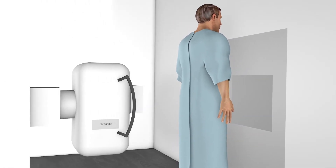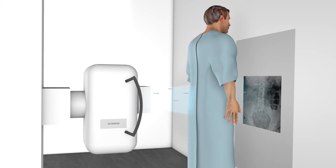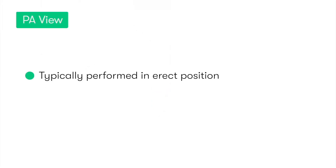The posterior-anterior, or PA view, involves x-ray beams being fired from the back of the patient through to the patient's front, and it's typically done with the patient standing upright with their abdomen facing the x-ray receptor. Unlike the AP view, which is used a lot, this view is rarely used in the acute setting, as typically these patients can be quite unwell and have a significant amount of abdominal pain, so getting them to stand upright for the image is not exactly the most sensible or kindest thing to do.